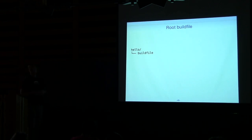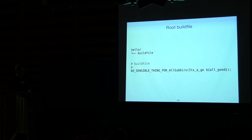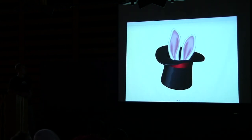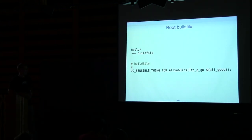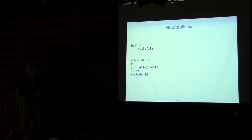We covered the subdirectory build files. What about the root build file? These are normally called directory build files because all they do is build subdirectories. Here's how you do it in build2 — three lines instead of magic. The first line assigns the subdirectories we want to build. Next line: the default current directory depends on building those two subdirectories. The last line includes the dependency information from those subdirectories.